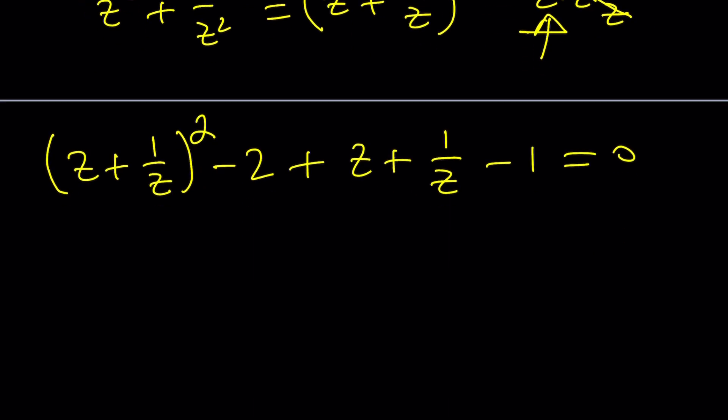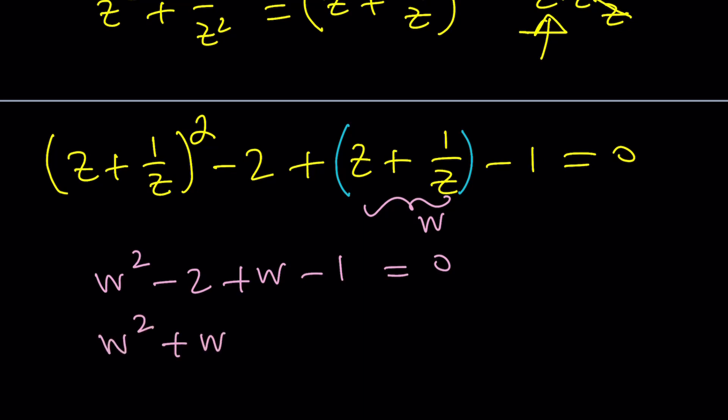So we can go ahead and now replace z plus 1 over z with something. How about w? Since we use those commonly in this channel. That gives us w squared minus 2 plus w minus 1 equals 0. And finally w squared plus w minus 3 equals 0. Yay! We got a quadratic equation. Nice. Let's go ahead and solve it and now we're going to back substitute. Okay.